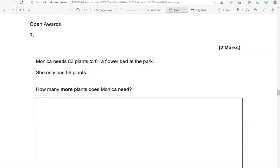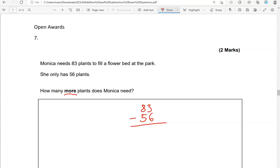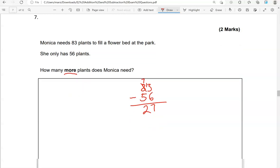Monika needs 83 plants to fill a flower bed at the park. She only has 56 plants. How many more plants does Monika need? So how many more? We're going to work out by doing 83 take away 56. We need to take away 6 from the 3, which means we've got to borrow 1 from the 8. So the 3 becomes 13. 13 take away 6 gives us 7. 7 take away 5 gives us 2. So 27 more plants. That's the answer.